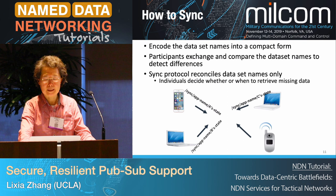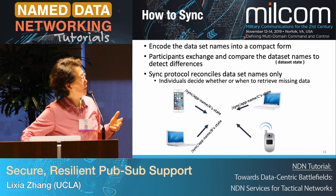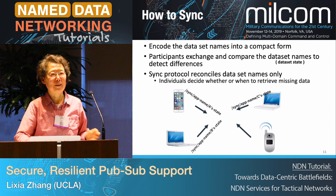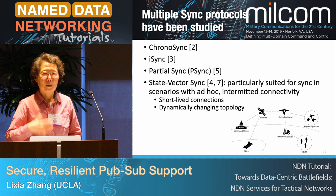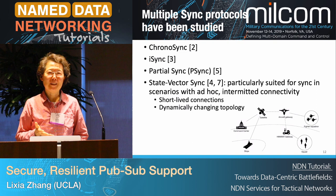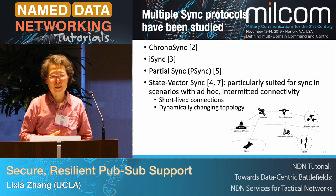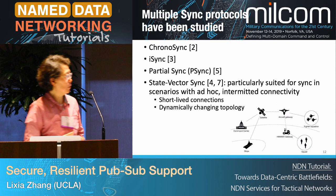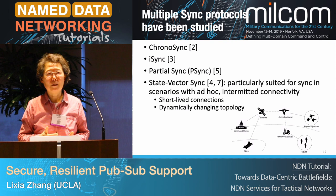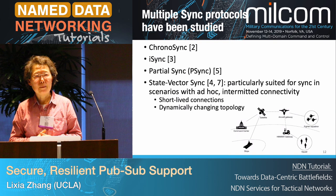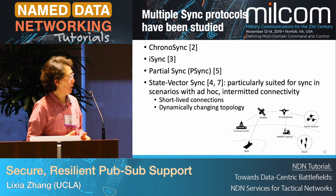To sync, you need a way to compactly represent the names into a representation, then send a so-called sync interest carrying this information about the data. For the dataset names — also called dataset state — the state is essentially what names are in the shared dataset. NDN recognized the need for a new transport protocol from day one, so there have been many approaches: earlier ChronoSync, iSync, partial sync. The one most suited for the battlefield — with short-lived connections and dynamically changing connectivity — is state vector sync.